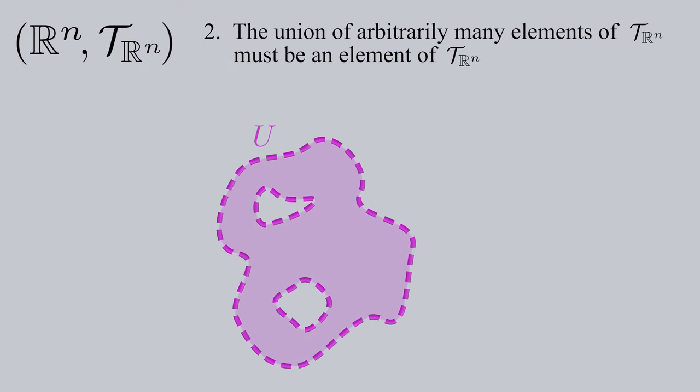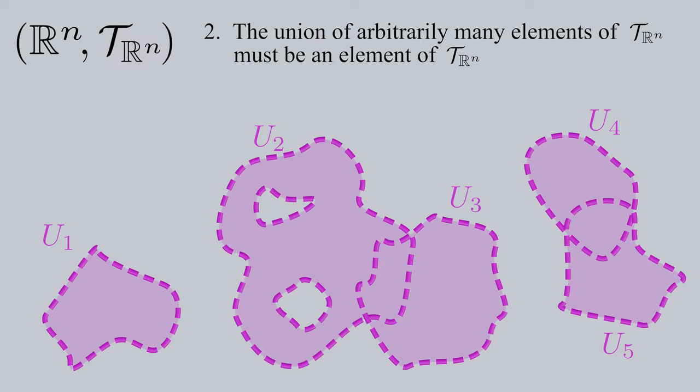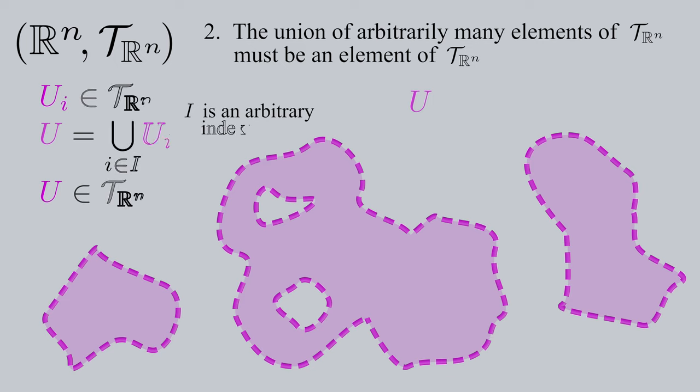Alright, so I'm not going to prove the second axiom, which requires closure under arbitrary unions, but I hope you can get a sense that if you take any amount of open subsets of Rn and then unify them, this union can still be thought of as a single open set U. This means that we can take a union of open subsets u sub little i across some arbitrary indexing set big I, and this union can be set equal to some new subset big U, which must also be open. Big I being arbitrary means that it can be of any size, and yes, a bunch of disjoint open sets unified together can still be treated as a single open subset.